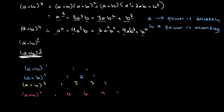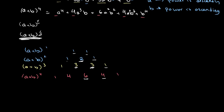What we end up seeing is that for each number, if you add the two numbers above it together, you get that number. So 1 and 1 gives us 2; 1 and 2 gives us 3; 2 and 1 gives us 3; 3 and 1 gives us 4; and 3 and 3 gives us 6. We can actually expand this to find higher powers of a plus b. Adding the fourth row gives us 1, 5, 10, 10, 5, 1.